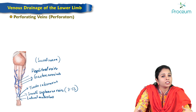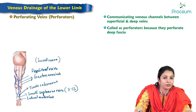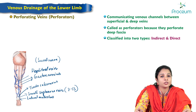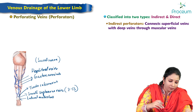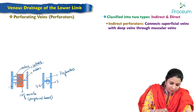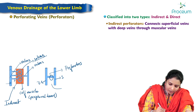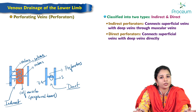Perforators are communicating venous channels between the superficial and deep veins; they are called perforators because they perforate the deep fascia. They are classified into two types: indirect perforators, which connect superficial and deep veins through muscular veins, and direct perforators, which connect superficial and deep veins directly without passing through any muscle.